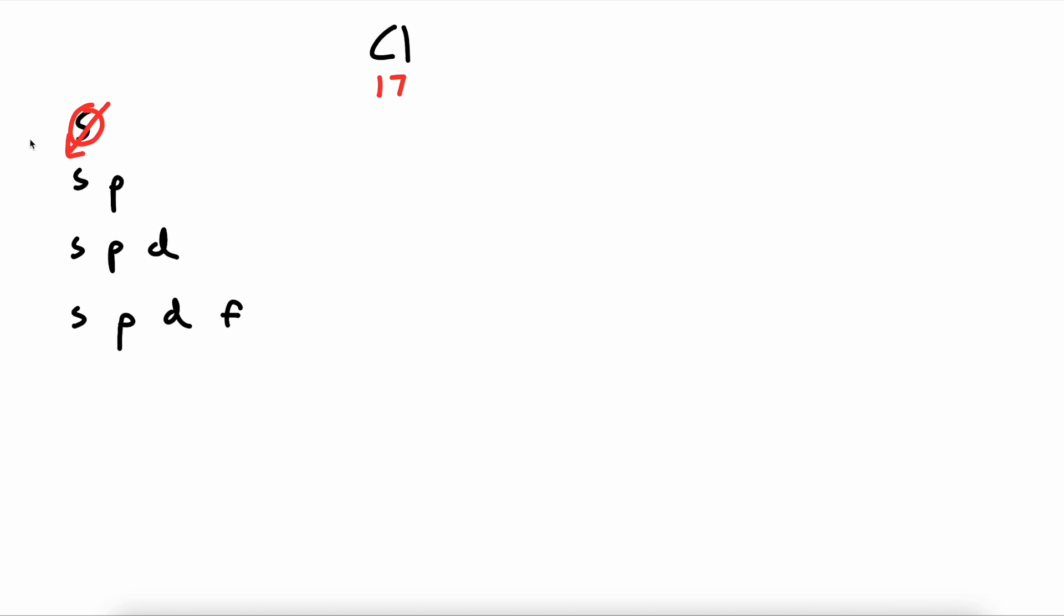First, we encounter an S. This is our first energy level. So we write 1, S, 2. We cross out 2 electrons from the 17 and are left with 15.